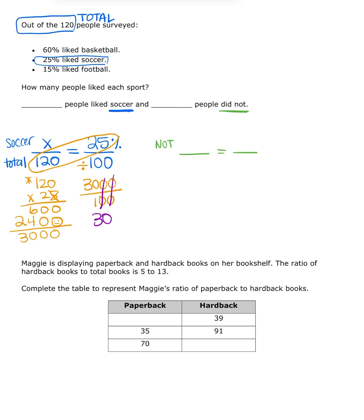So how many students, how many people liked soccer? 30. 30 people liked soccer. Remember, it's 30 people, which is 25%. So I have 30 people here who liked soccer. Again, 30 people, but that was 25%. Not the same number.